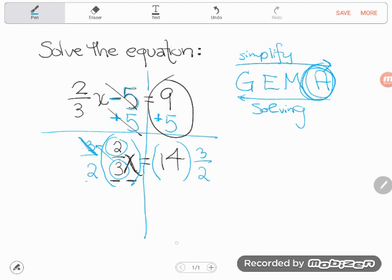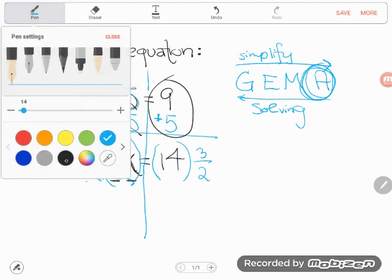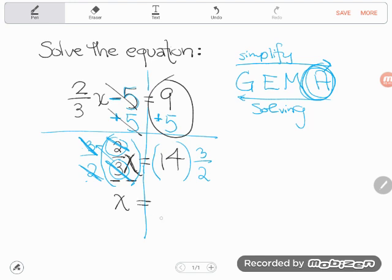So 3 in the numerator cancels with the 3 in the denominator. A 2 up here in this numerator cancels with the 2 in the denominator, and I am left with an x all by itself, isolated, just like I wanted. And on this side, these are some fractions to multiply. Now, you could do this in your calculator, 14 times 3 halves.